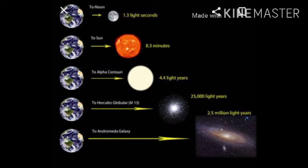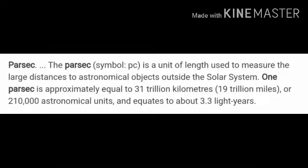Coming to the next unit of length — parsec, or parallactic second. Its symbol is given by small 'pc'. Parsec is the unit of length used to measure large distances to astronomical objects outside the solar system. It is equal to almost 3.3 light years, that is 1 parsec equals 3.3 light years. To measure distances between planets or stars within our solar system, we use astronomical unit or light year. To measure the distance between objects outside our solar system, such as between 2 galaxies, we use parsec.